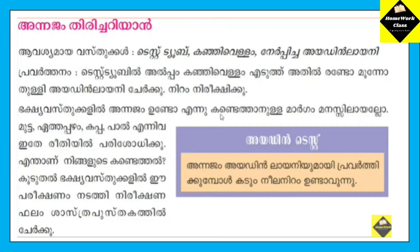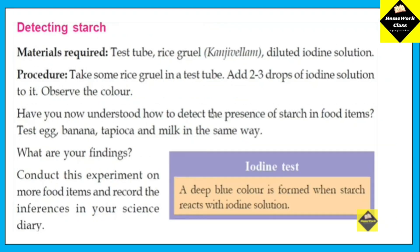This is the test tube. We are going to remove the iodine line. You can remove the iodine line. This is the test tube with rice gruel and diluted iodine solution. Procedure: take some rice gruel in a test tube and add 2–3 drops of iodine solution, then observe the color. A blue color is formed when starch reacts with iodine solution.